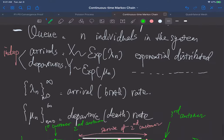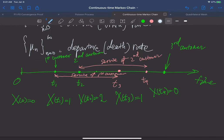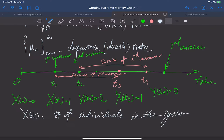So let me write down the formal definition. We have X(t). And X(t) is number of individuals in the system. And the state space is, of course, 0, 1, 2, or the positive integer.